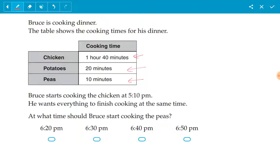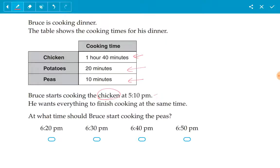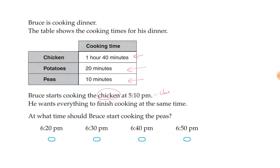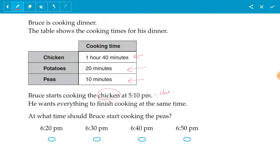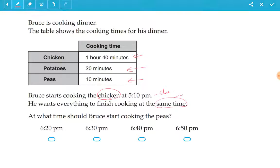Bruce starts cooking the chicken at 5:10 PM. This is our clue. He wants everything to finish cooking at the same time. This is our second clue.